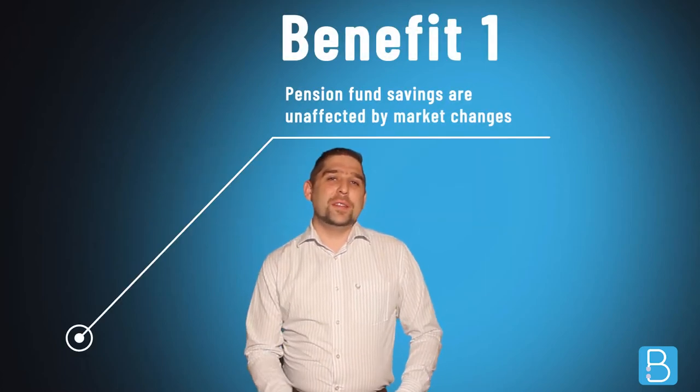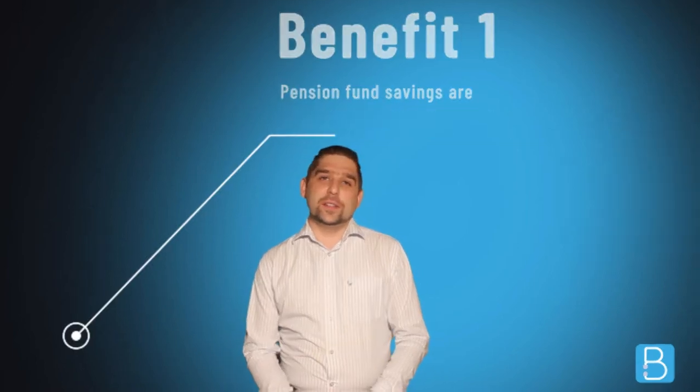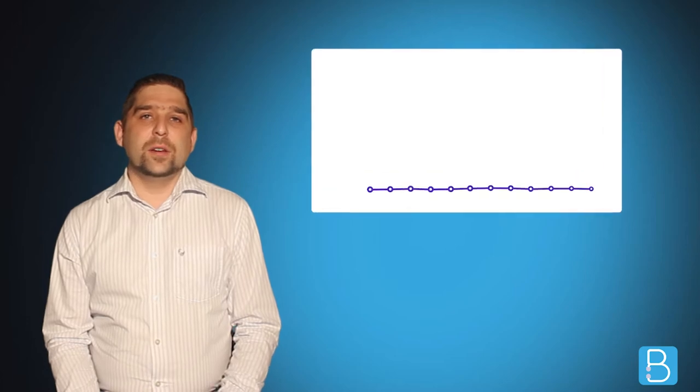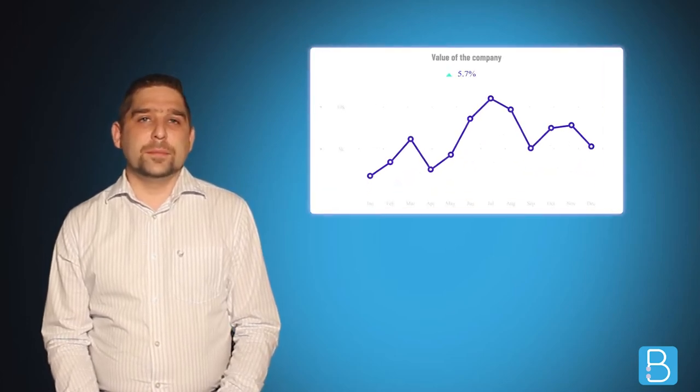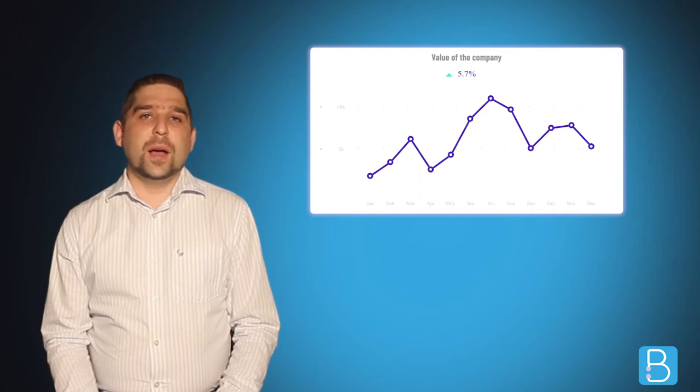Benefit number one: Pension fund savings are unaffected by market changes. Normally when you take out a retirement annuity or join a pension fund scheme, your money is invested in what is called the market. The market, quite simply, is where financial instruments are bought and sold, things like shares in a company. As you know, the value of those shares can go up and down, and therefore your investment can go up and down just like a roller coaster. However, members of the GPF don't have this worry, as there is an established formula to calculate exactly how much you will get at retirement.